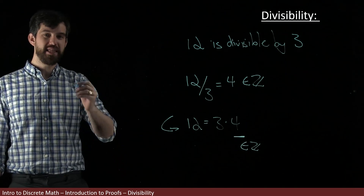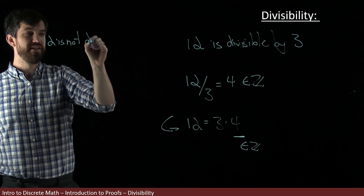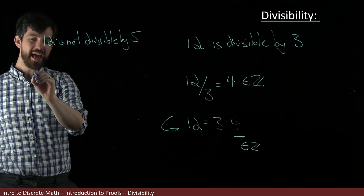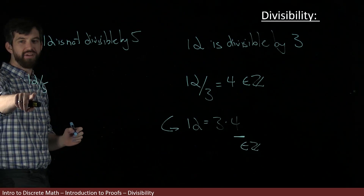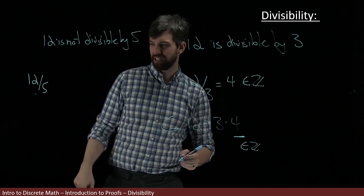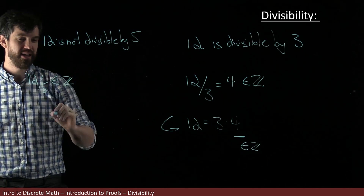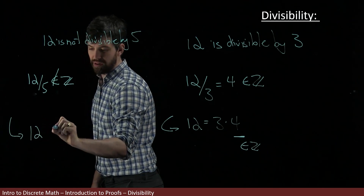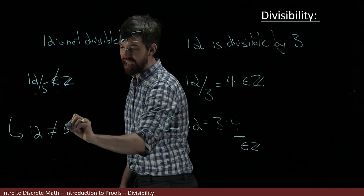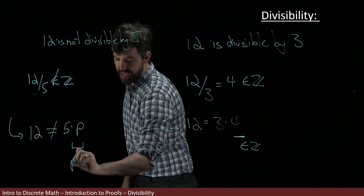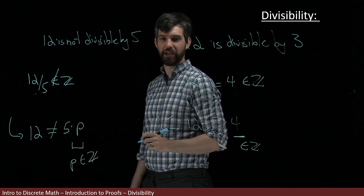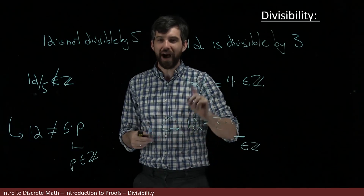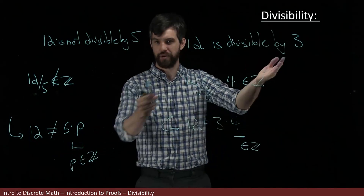As a different example, I could say that 12 is not divisible by 5. What I mean is that if I take 12 divided by 5, I get some weird decimal — it's not going to be inside the integers. Another way to say it: 12 is not equal to 5 times some value p, where p is an element of the integers.